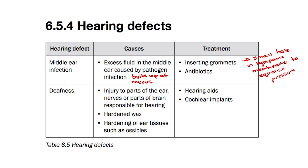The second hearing defect is deafness. Deafness could be due to injury to parts of the ear, nerves or parts of the brain responsible for hearing, such as the cerebrum. It could also be due to hardened wax in the auditory canal, preventing sound waves from reaching the tympanic membrane.